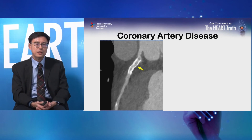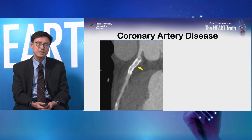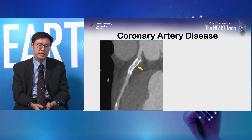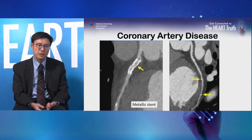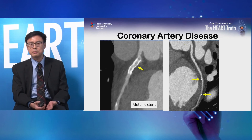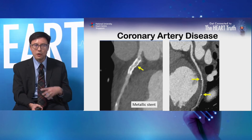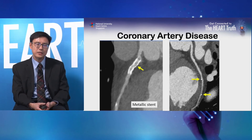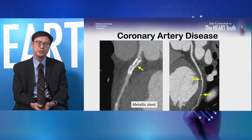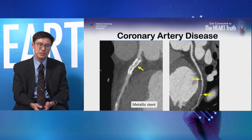We can also use CT coronary angiogram to assess stents. The metal in the stent appears as white on CT. This is an example of a previously implanted bioabsorbable stent — the stent material dissolves over time, leaving behind two platinum markers to indicate the location of the previous stent. In this case, the artery is open and patent.